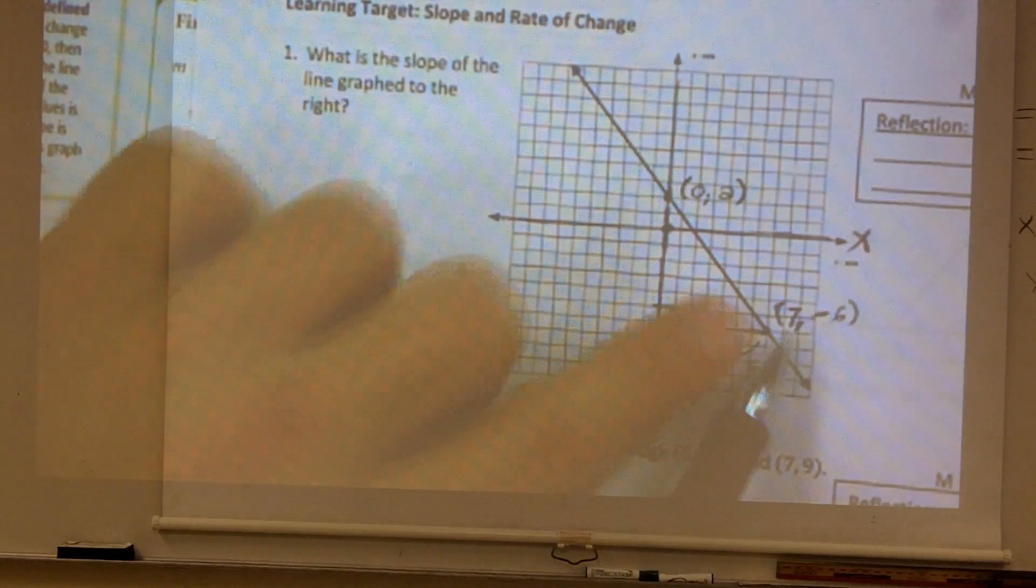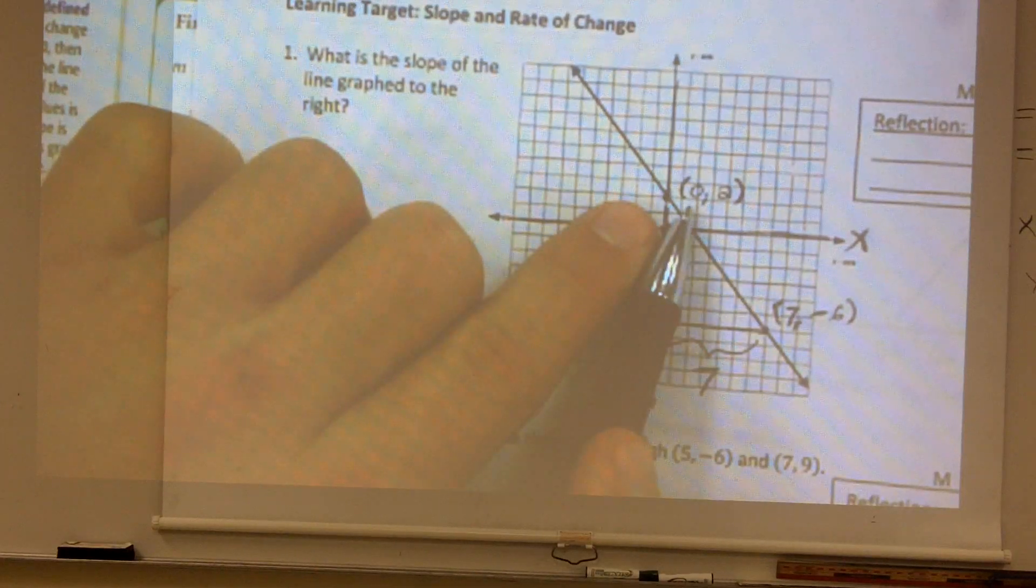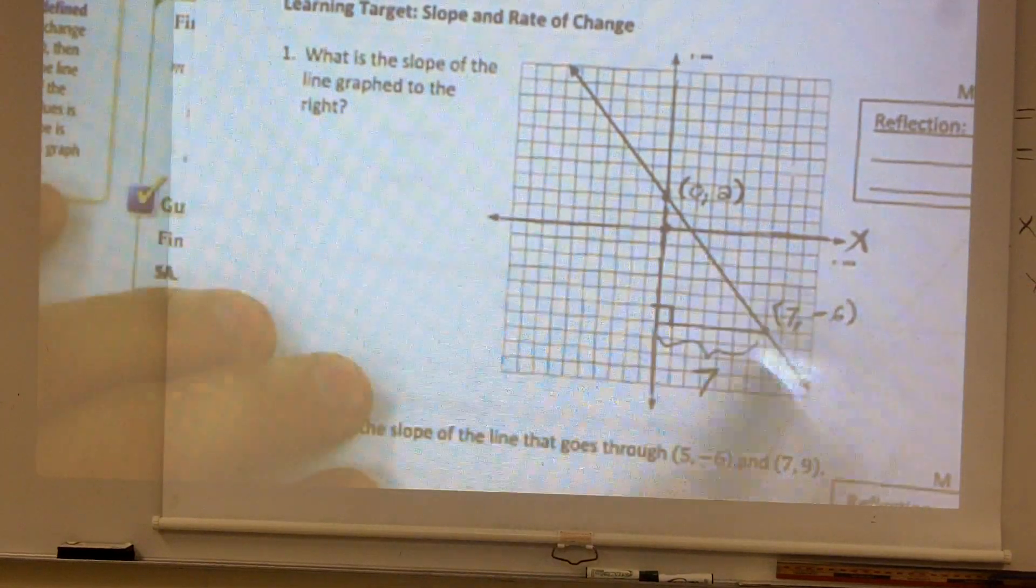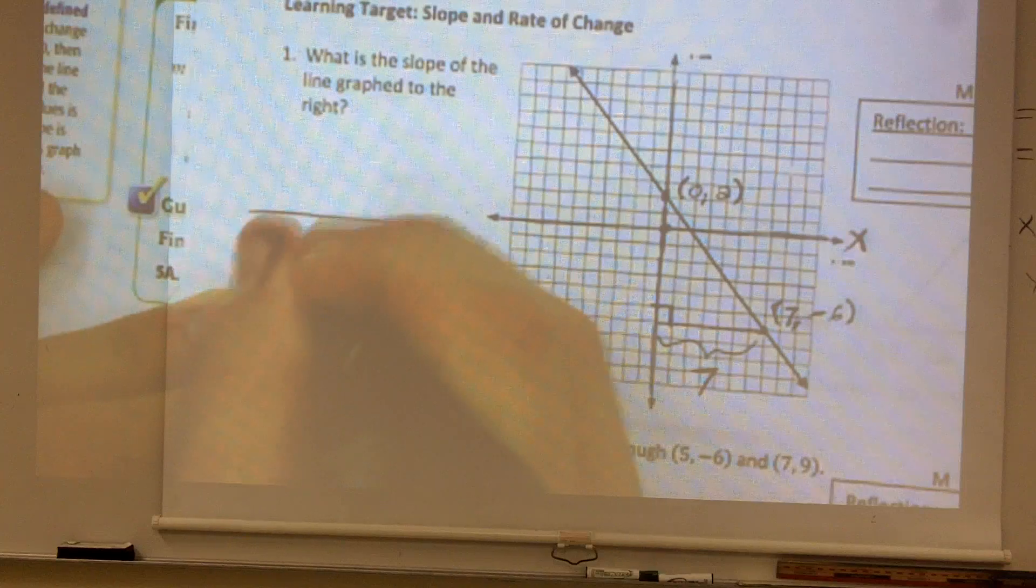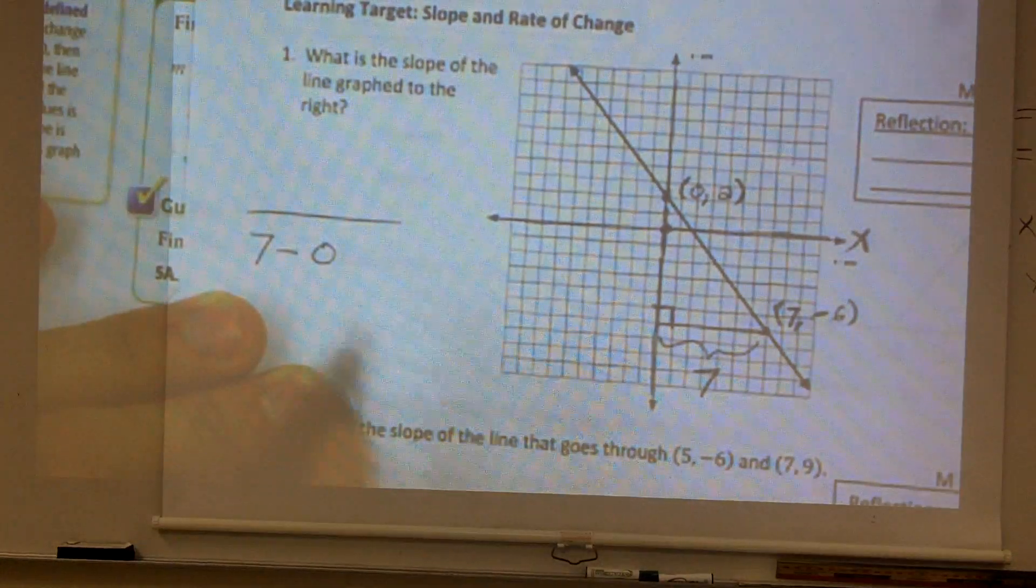We could also do it like this. Take your x value, which is 7. Take your other x value, which is 0, and subtract them. So you could also say 7 minus 0. Right? Remember x values are on the bottom?